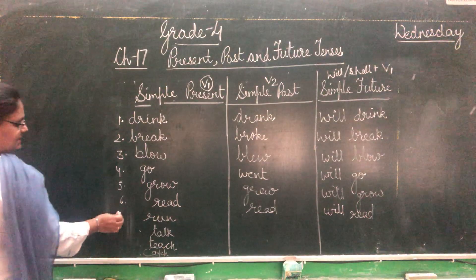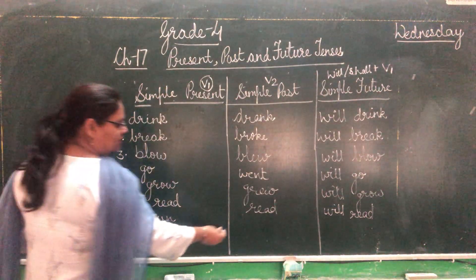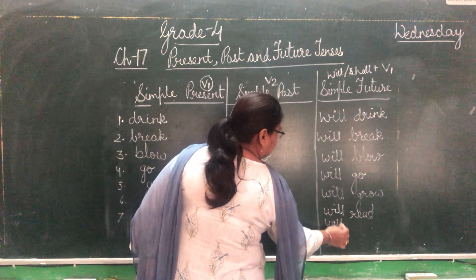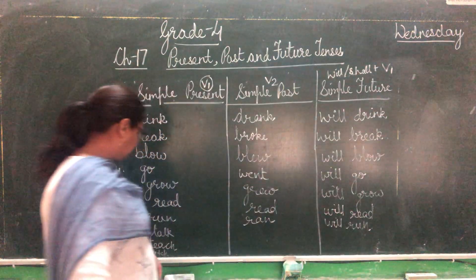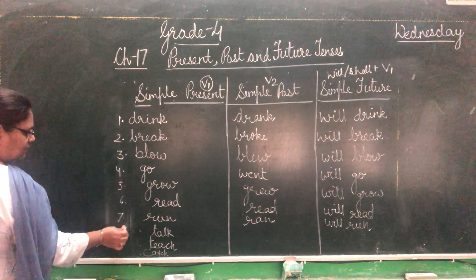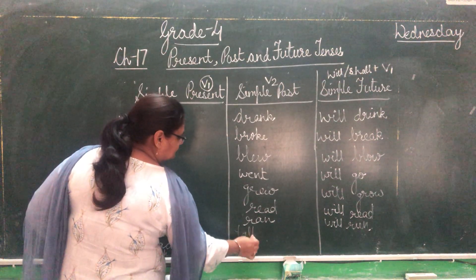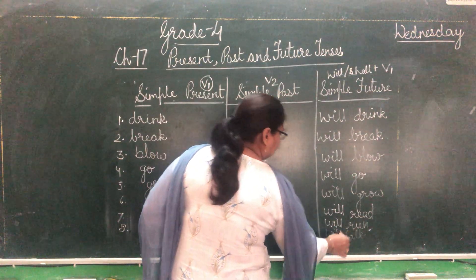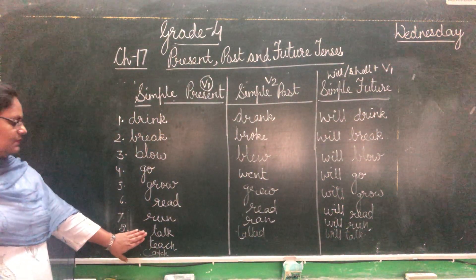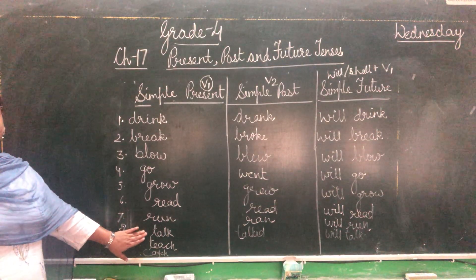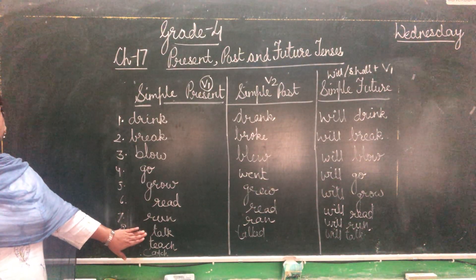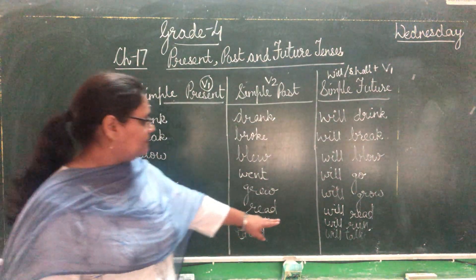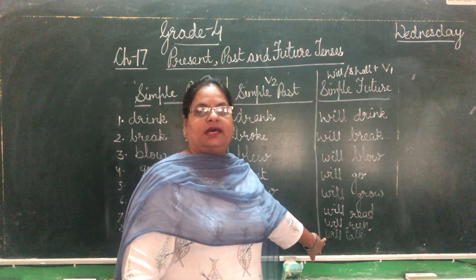Seventh is run. Past tense of run is ran, and future is will run. Next is talk, talked, will talk. My friends talk about their home. They talked about their home. I will talk to my friends.